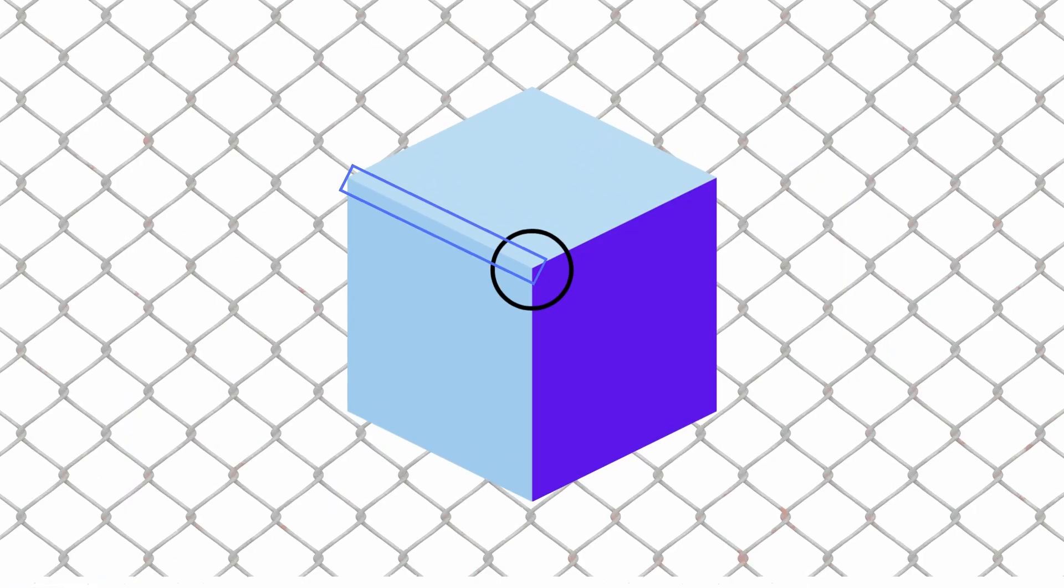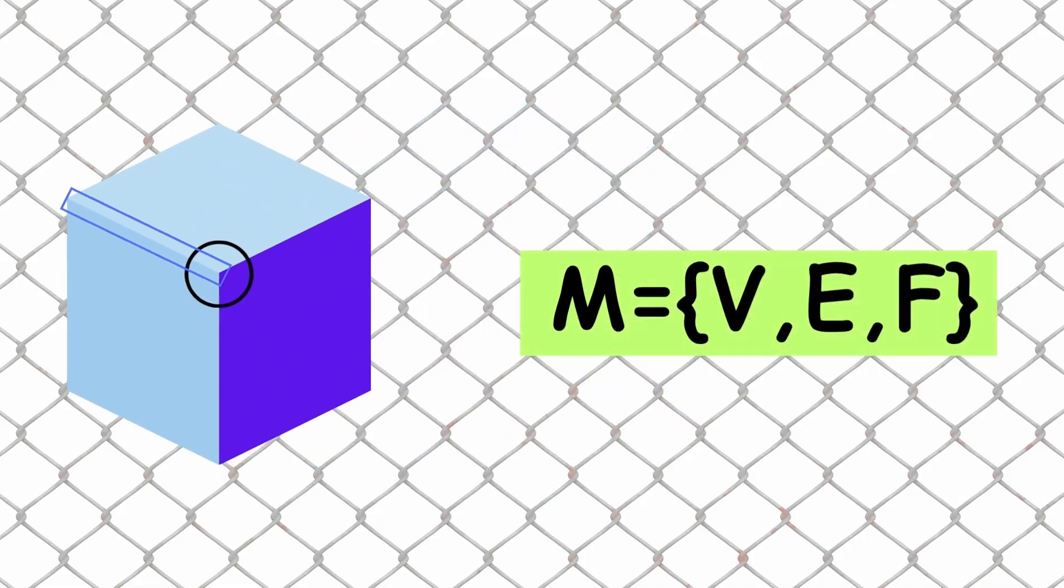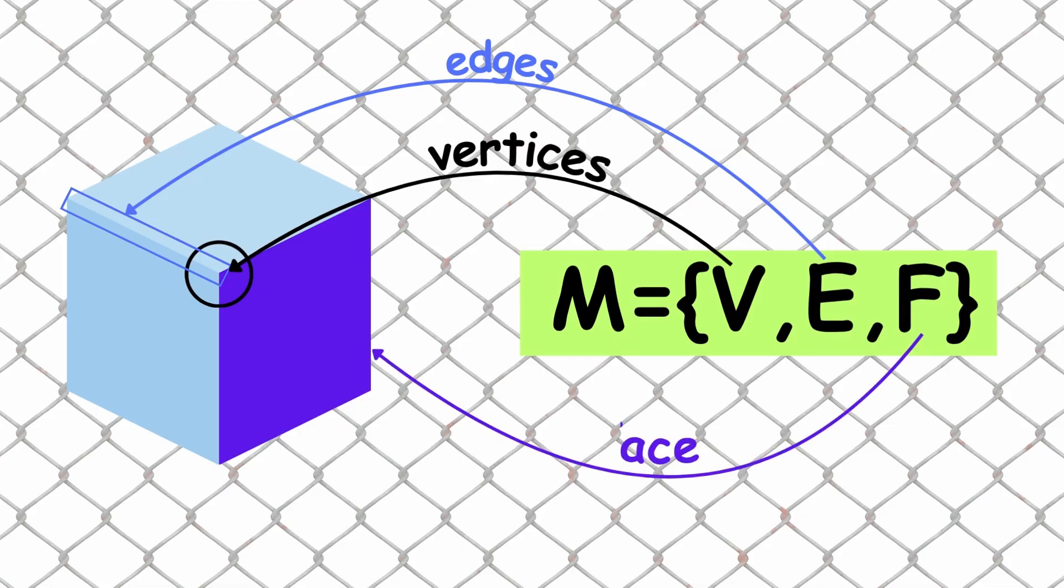This structure defines a mesh, which can be mathematically expressed as M equals V E F, where V represents the vertices, E the edges, and F the faces of the model.